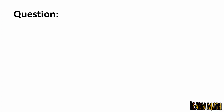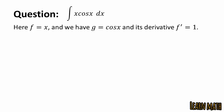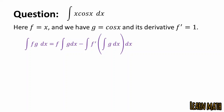Now look at the question: integral of x cos x dx. Here f is equal to x, g is equal to cos x, and the derivative of f, which is f prime, is equal to 1. Now we know the integration by parts formula — just replace the values of f, g, and f prime to get the result.